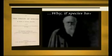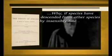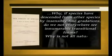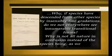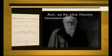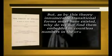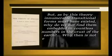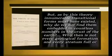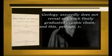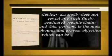"Why, if species have descended from other species by insensibly fine gradations, do we not everywhere see innumerable transitional forms? Why is not all nature in confusion instead of the species being, as we see them, well defined? But as by this theory innumerable transitional forms must have existed, why do we not find them embedded in countless numbers in the crust of the earth? Why then is not every geological formation and every stratum full of such intermediate links? Geology assuredly does not reveal any such finely graduated organic chain, and this perhaps is the most obvious and gravest objection which can be urged against my theory."